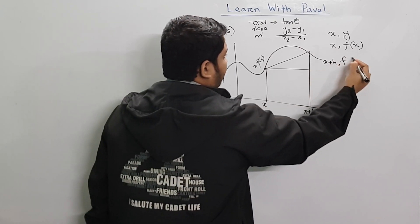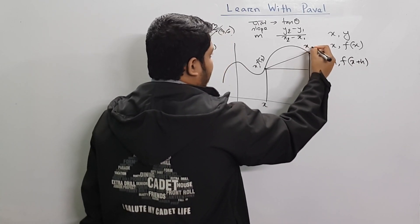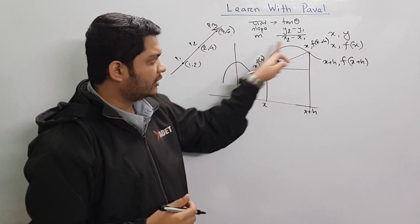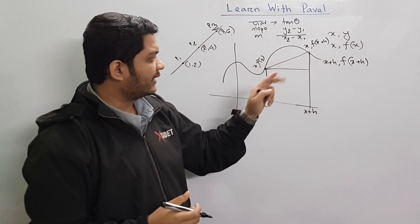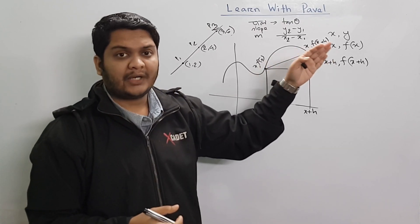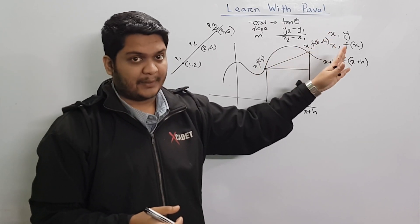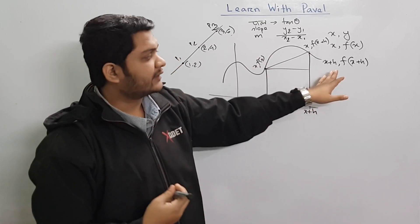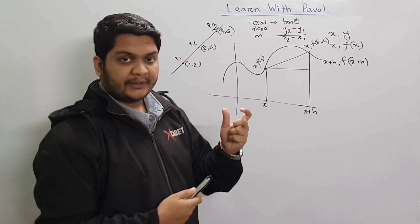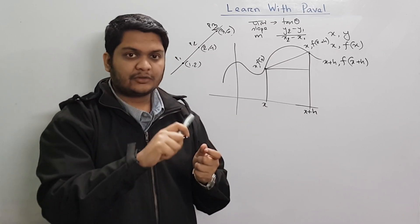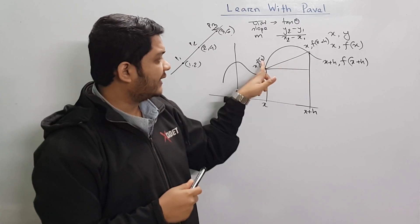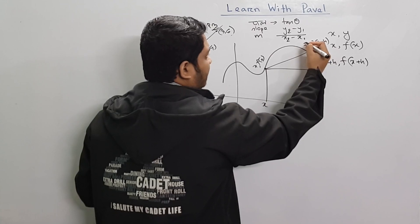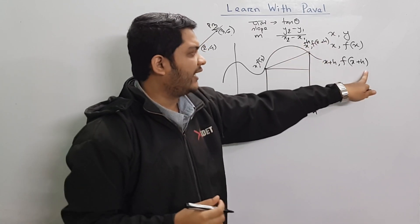So we can find that f, f, f, f, f. In this case, we can find a particular topic, as we can find in the previous video. This y is equal to f of x. So y is equal to function of x. This is x plus x plus x plus x.